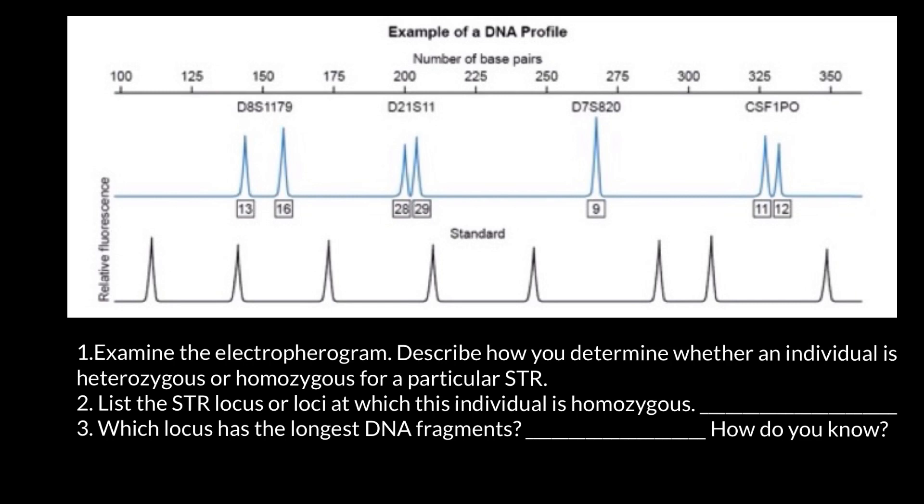Now you know that each spike here is made by different size molecules. This person has two chromosomes number one, two chromosomes number two, two chromosomes number three, because we are diploid and have all our chromosomes in two copies.